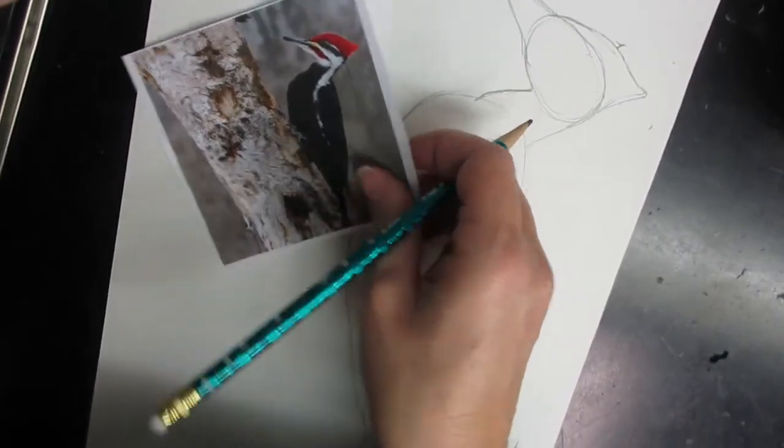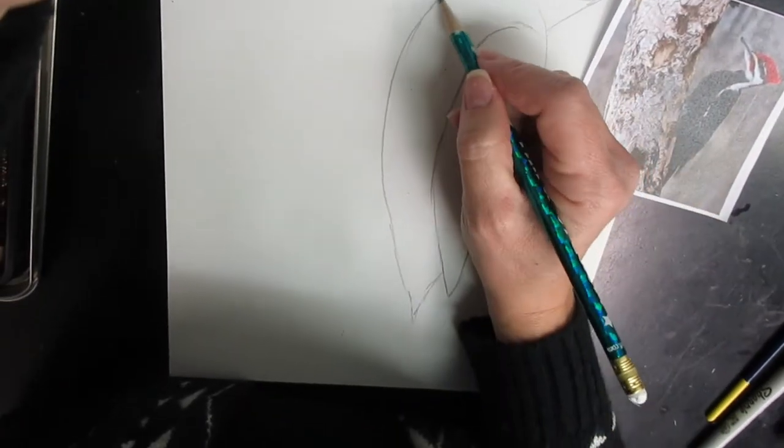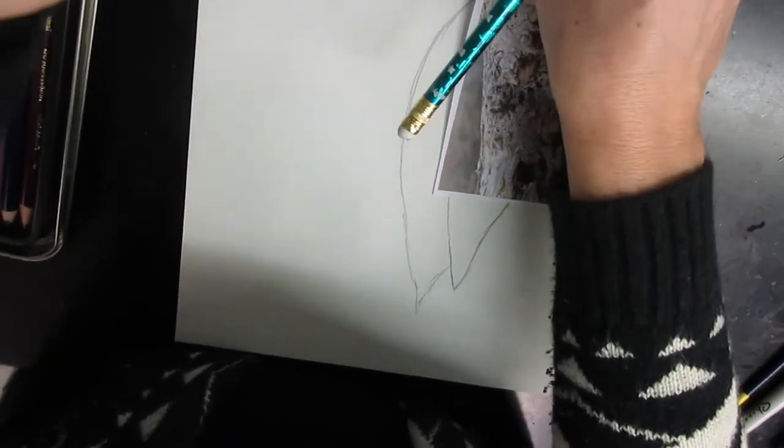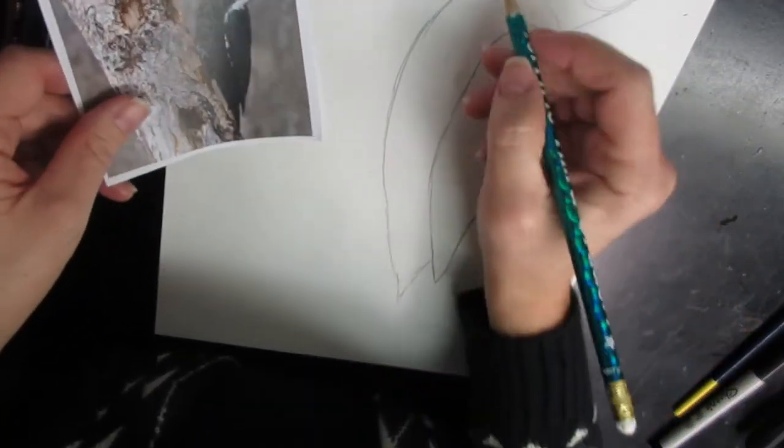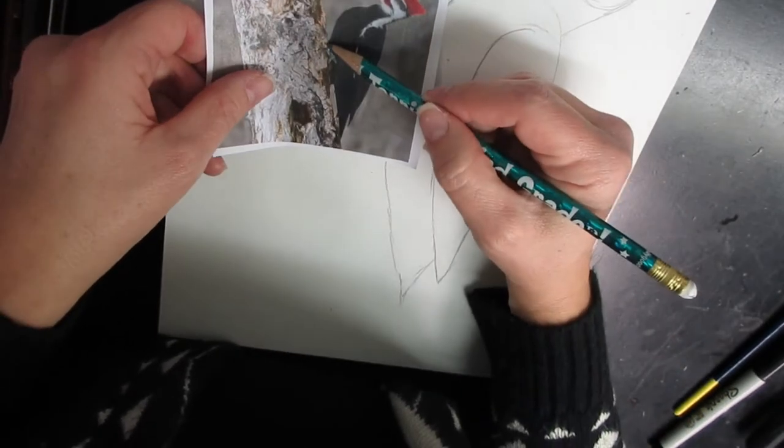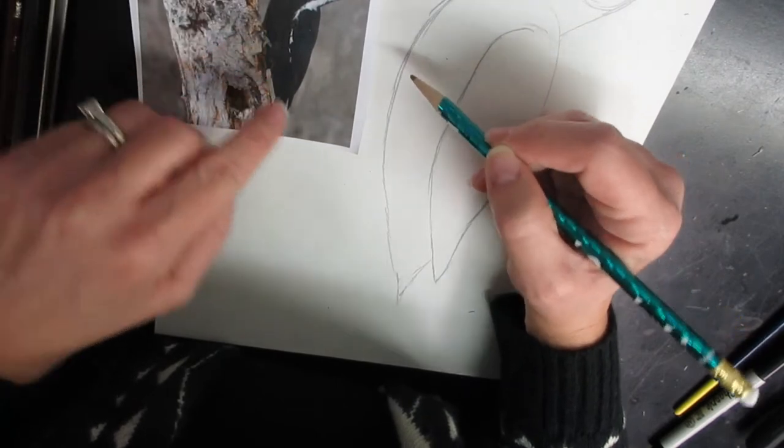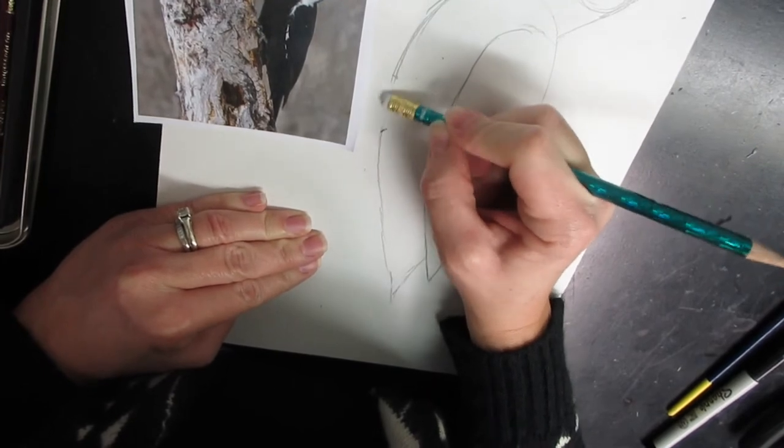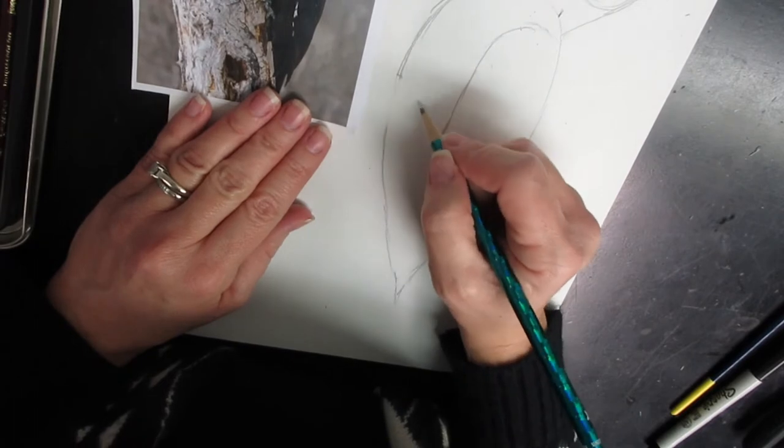The last detail that I need to draw in the body area is probably the foot. You can see the foot is grabbing onto the tree there. So I'm going to work on that. It is way down here. So I need to leave some space. There we go. I think I'm going to start right in here. I'm going to erase a little spot for me to work in.